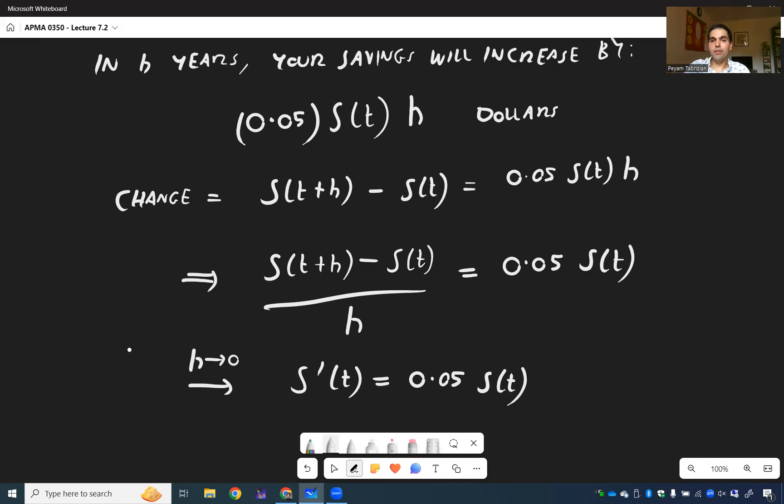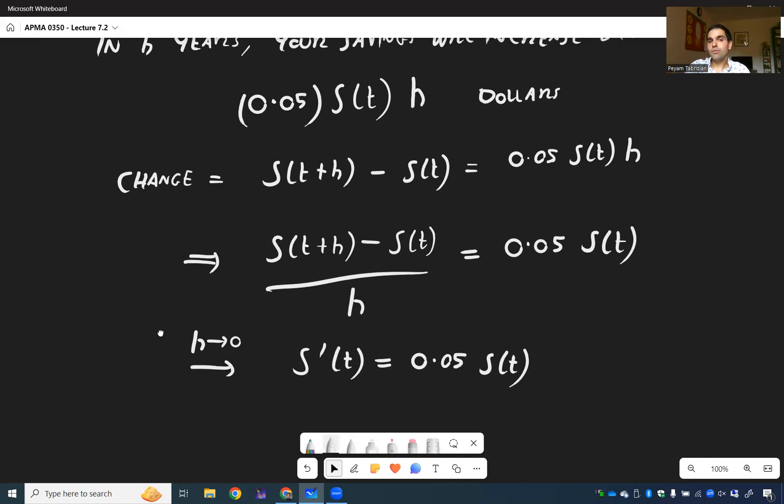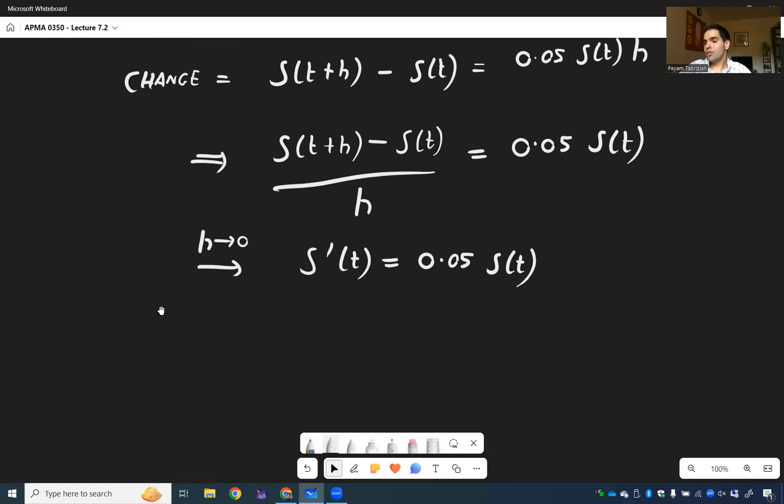Wonderful. And, of course, this is not the hardest differential equation. So step two, what we have, we have S'(t) = 0.05 S(t). It's just our basic differential equation, with initial condition S(0) = 100. I think we started with 100.